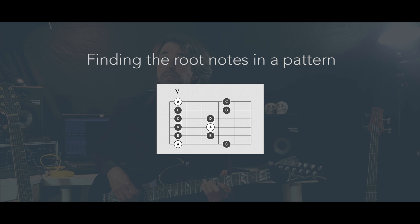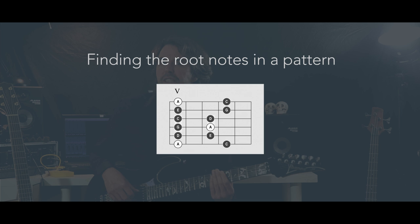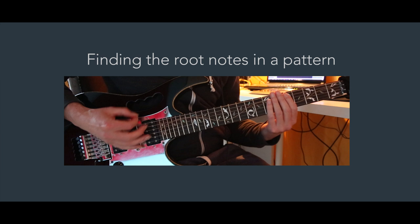So let's find out where these root notes are hiding in these patterns. The first pattern has three positions for the root: on the sixth, on the fourth, and on the first string. Put on a backing track in A minor and try to make very simple phrases from one root note A to the other.